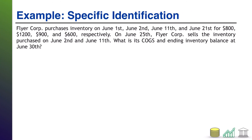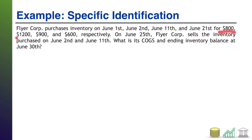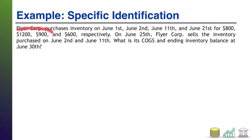Here's an example. Flyer Core purchases inventory on June 1st, June 2nd, June 11th, and June 21st — one unit each day — at their respective prices. On June 25th, Flyer Core sells the inventory purchased on the 2nd and the 11th. In a specific identification system, calculating cost of goods sold is straightforward: we sold the June 2nd item for $1,200 and the June 11th item for $900.